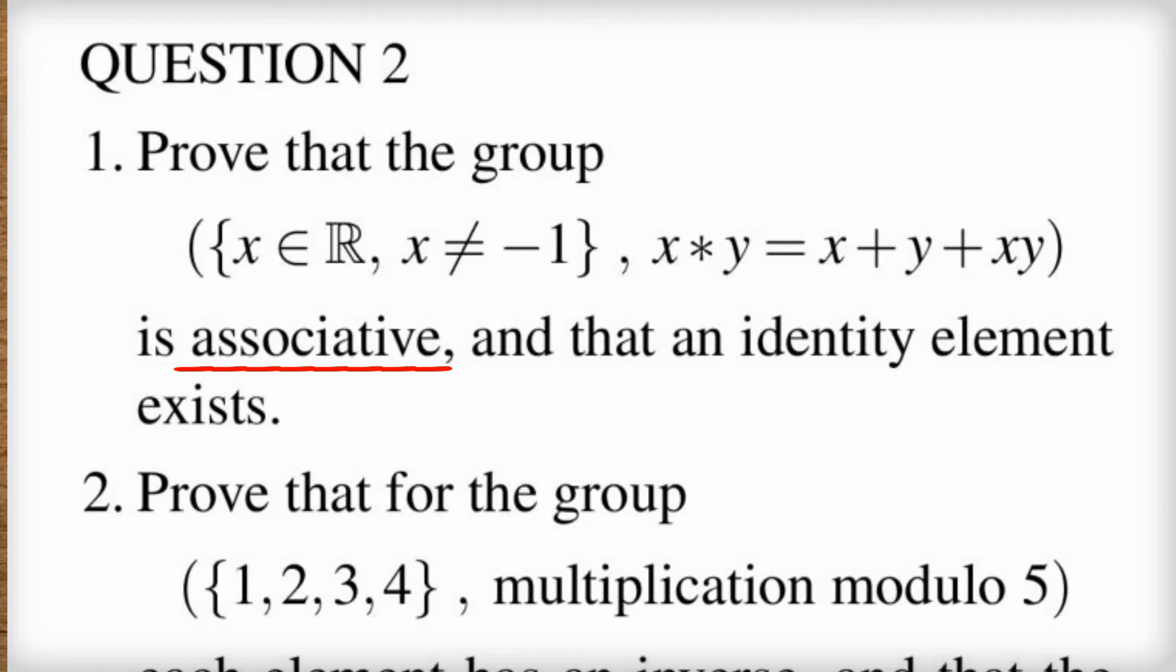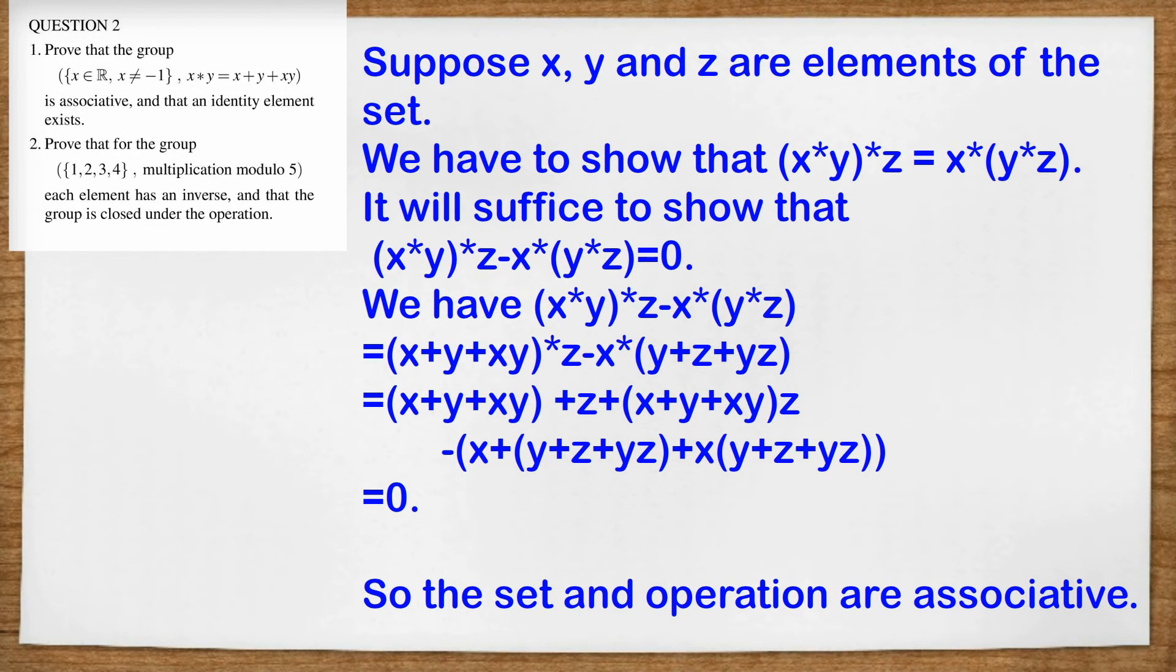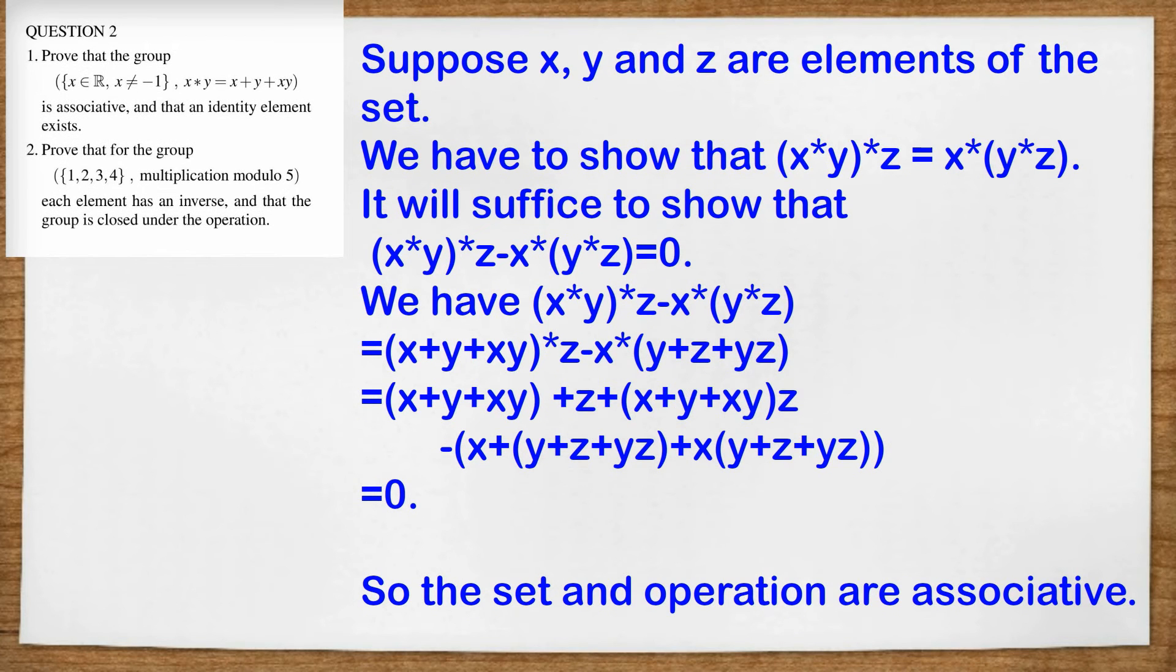So if we're going to show associativity, this is one way we could do it. Suppose x, y and z are elements of the set. We have to show that (x*y)*z equals x*(y*z). It will suffice to show that (x*y)*z minus x*(y*z) equals zero. We have (x*y)*z-x*(y*z) equals (x+y+xy)*z-x*(y+z+yz). Now expanding, x*y is x plus y plus xy, and y*z is y plus z plus y times z.